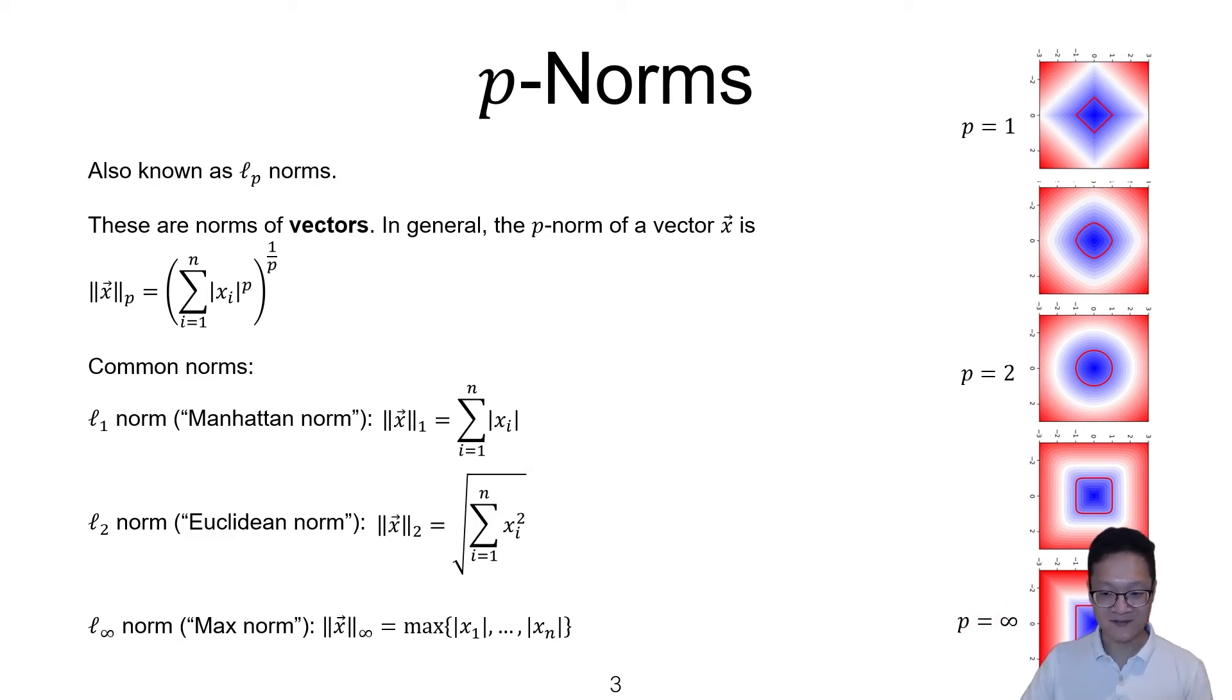At the bottom, we have the infinity-norm, which the set of vectors that have an infinity-norm of 1 actually lies on a square. And then as you go from infinity-norm down to 2-norm, the square corners get rounded until you get to a circle.